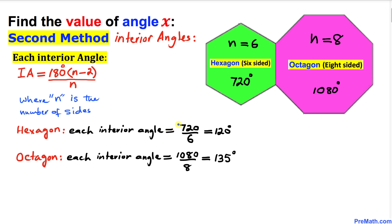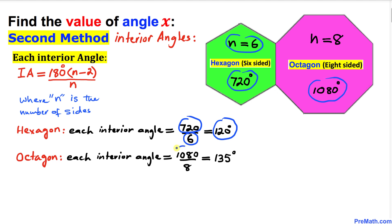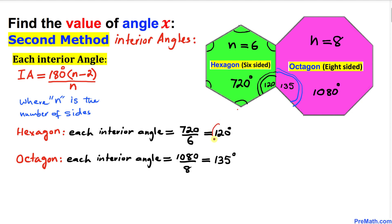Each interior angle for the hexagon is 720 degrees divided by n equals 6, which turns out to be 120 degrees. Likewise, for the octagon each interior angle is 1080 divided by 8, and dividing that out gives 135 degrees. So each interior angle for this hexagon is 120 degrees and each interior angle for this octagon is 135 degrees each.